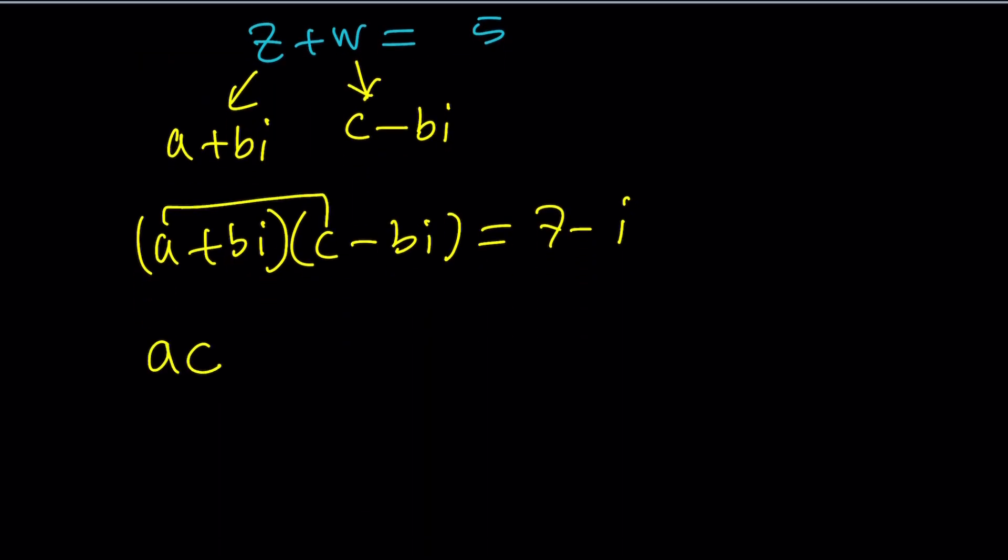And then we get the minus ABI and plus CBI. We can kind of write it as BC minus AB altogether multiplied by I, which is equal to 7 minus I.